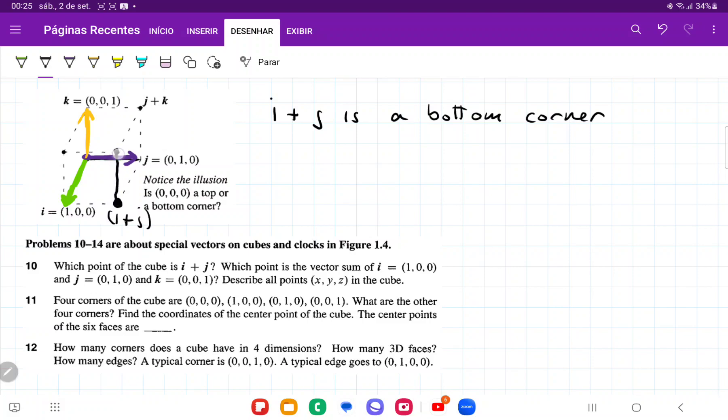So we're going to go from here and just move up, and this point here is our i plus j plus k. So we can say that i plus j plus k is an upper corner.